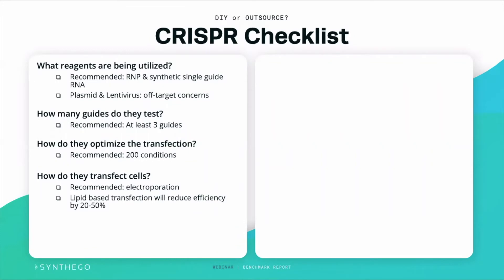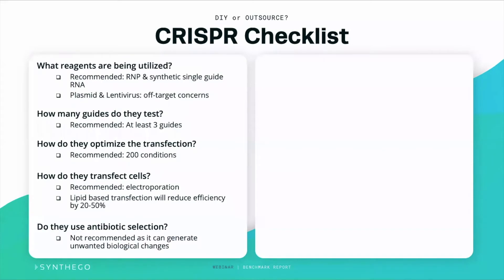How do they transfect the cells? Are they using electroporation, which is considered the gold standard for editing cells? We know that lipid-based transfection will reduce the efficiency of that transfection by 20% to 50%, reducing the potential for them to succeed in generating that model. At Synthago, we always use electroporation for all of our editing.